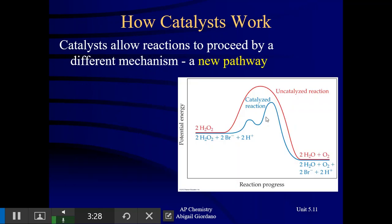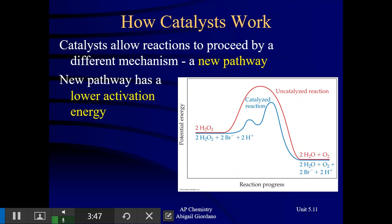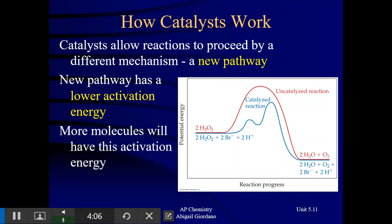A catalyst causes a reaction to go faster because it creates a new pathway for the original reactants to get to the final products. If the red curve represents the uncatalyzed reaction and the blue curve represents the catalyzed reaction, it makes the reaction go faster by lowering the activation energy. Since there's a lower energy requirement, more collisions are going to have that slightly lower energy, and thus the reaction proceeds quicker.